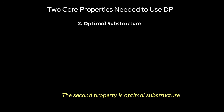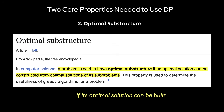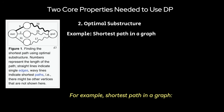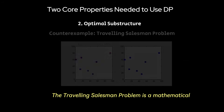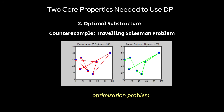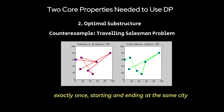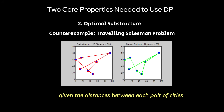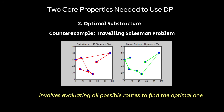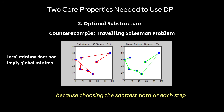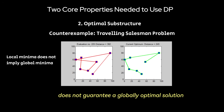The second property is optimal substructure. A problem has optimal substructure if its optimal solution can be built from optimal solutions of smaller subproblems. For example, the shortest path in a graph — the classic Dijkstra's algorithm. If the shortest path from A to C passes through B, then the shortest path from A to B must also be optimal. The traveling salesman problem, which is an NP-hard problem, involves evaluating all possible routes to find the optimal one. It doesn't have optimal substructure because choosing the shortest path at each step does not guarantee a globally optimal solution.